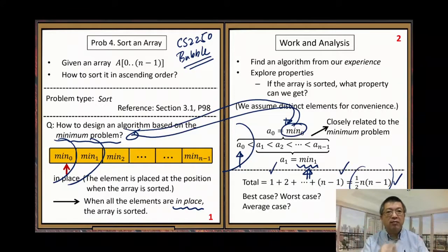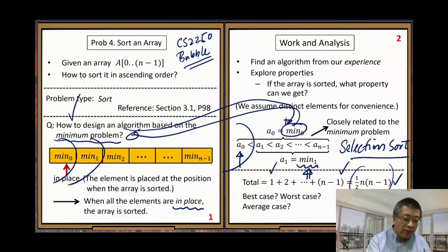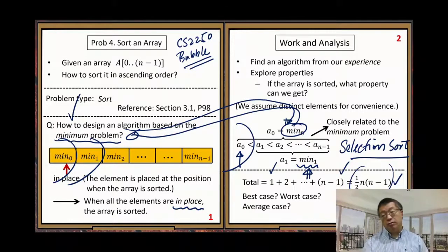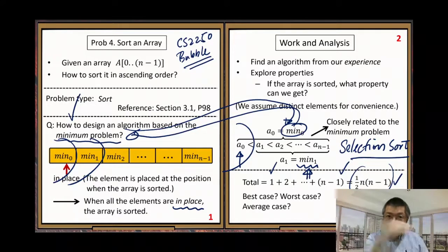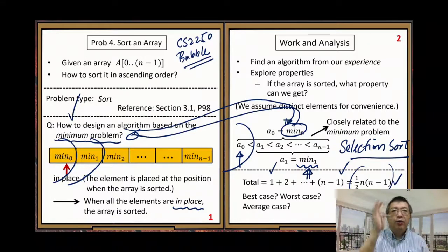Let's go back to the name of this solution. Remember, the title of 8.1 is Selection Sort. Why do we call this sorting algorithm 'selection sort'? Because the minimum problem is a selection problem — the minimum problem is one of the selection problems. Also, if you look at the procedure, every round we select the minimum element and put it in place, applying this solution many rounds. Finally, we put all the elements in place and solve the problem.